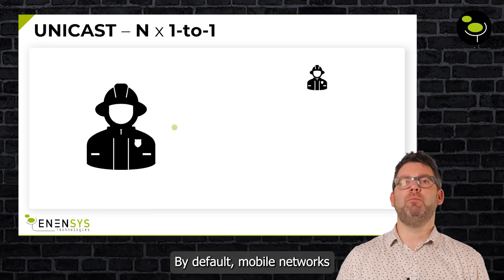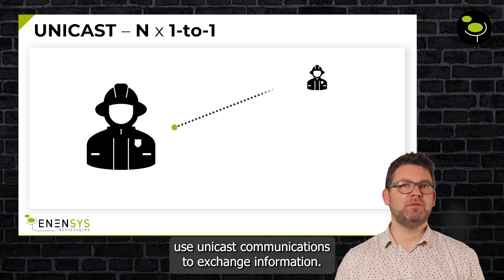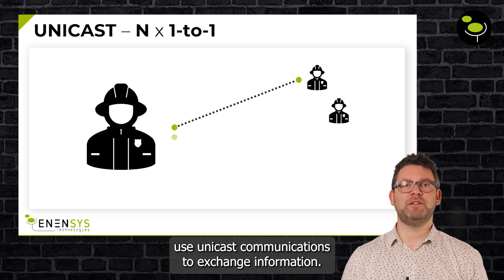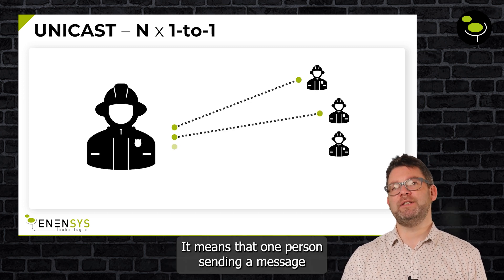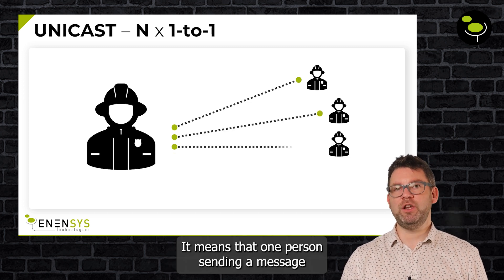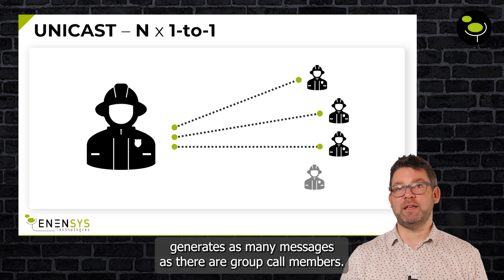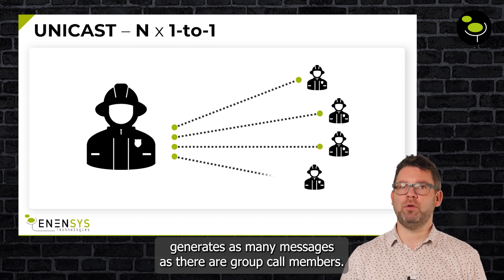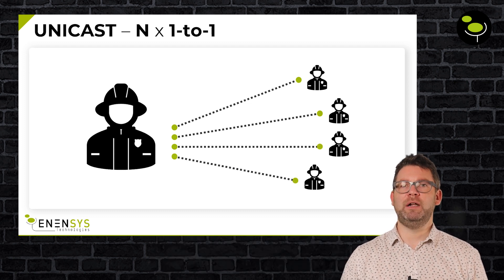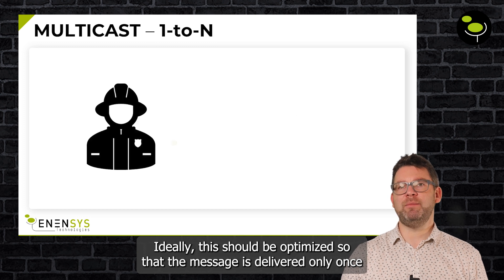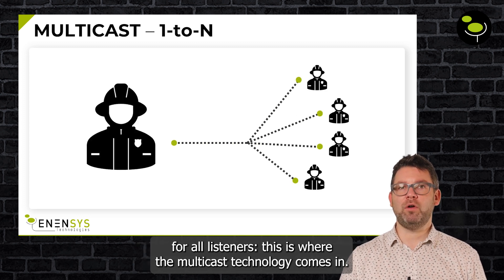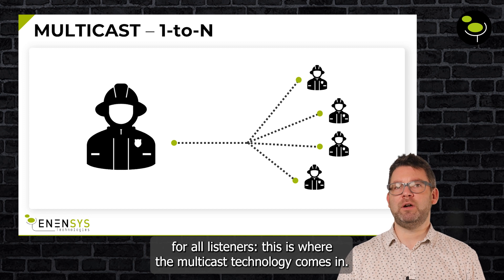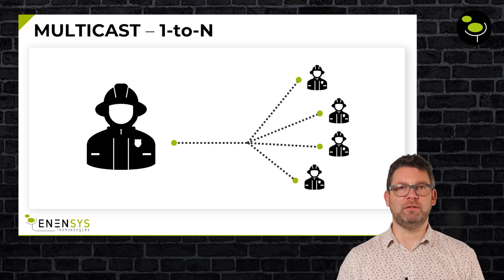By default, mobile networks use unicast communications to exchange information. It means that one person sending a message generates as many messages as their group call members. Ideally, this should be optimized so that the message is delivered only once for all listeners. This is where the multicast technology comes in.